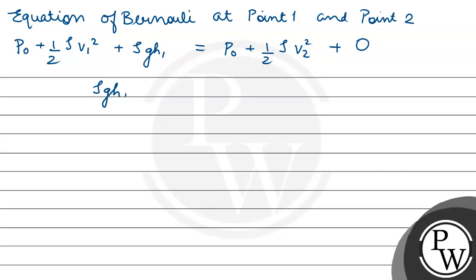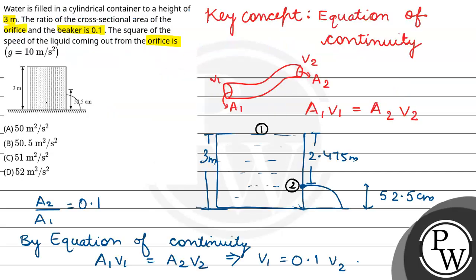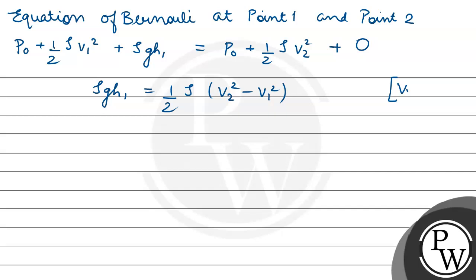Rho g h1 equals one-half rho times V2 square minus V1 square. Since V1 equals 0.1 V2, we get 2 g h1 equals V2 square minus 0.1 V2 square. So V2 square equals 2 times 10 times 2.475.